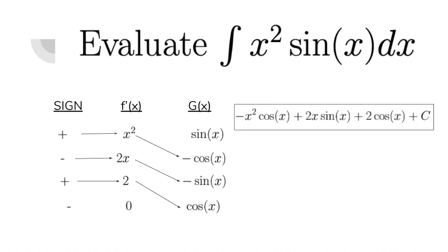The answer to this problem is negative x squared cosine of x plus 2x sine x plus 2 cosine x. And never forget the plus C, that's a very common mistake.